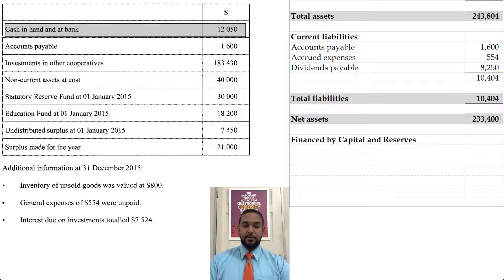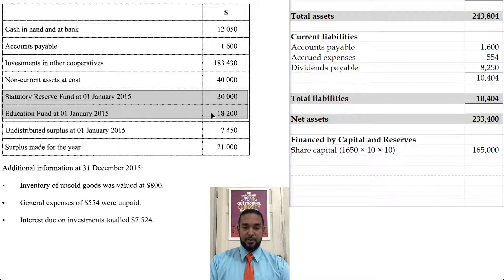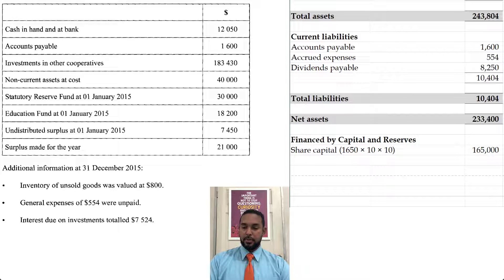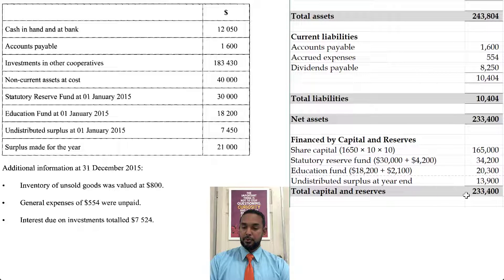That is financed by capital and reserves. The share capital is $165,000 — 1,650 students who bought 10 shares at $10 each. We also have two reserves: the statutory reserve fund and the education fund, each boosted by the current appropriation account. The statutory reserve fund: $30,000 plus $4,200 gives a new total of $34,200. The education fund: $18,002 plus $2,100. And don't forget the undistributed surplus. This gives us a total of $233,400, which ties back with the net assets — the balance sheet balances.